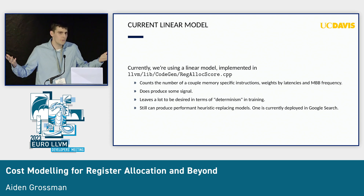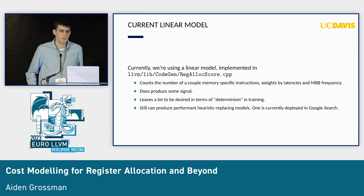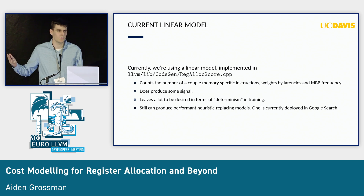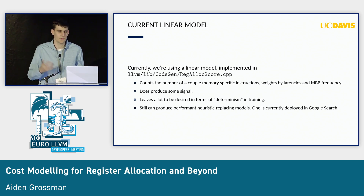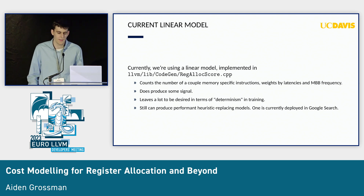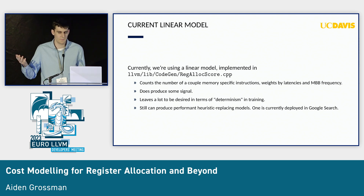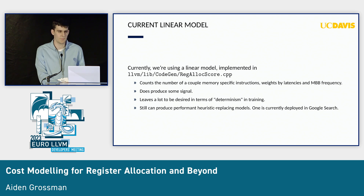It's used to train models that are currently shipping in production, like ones used to compile Google Search, and you can definitely see certain metrics improve — like loads will be removed once you train an ML model using that cost model — but it definitely leaves a lot to be desired.